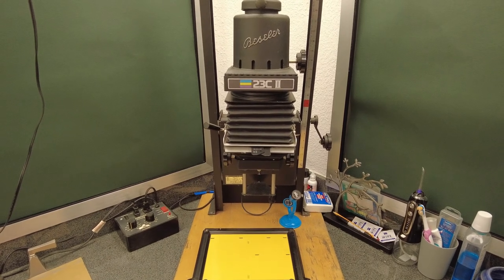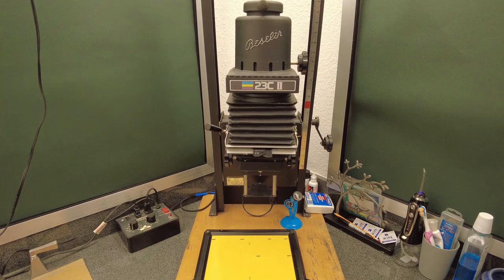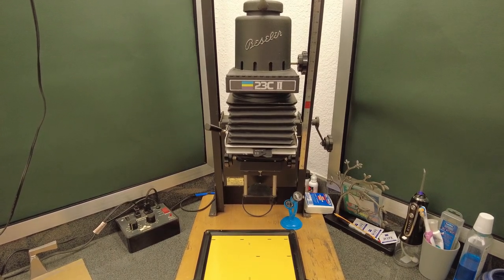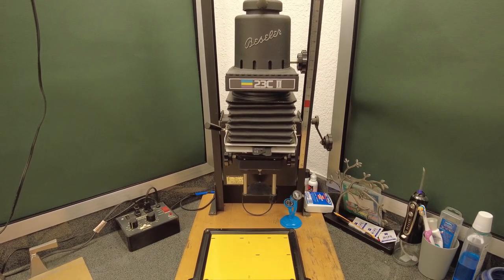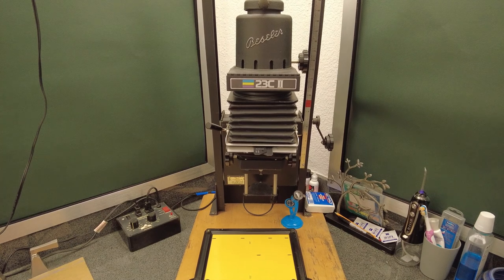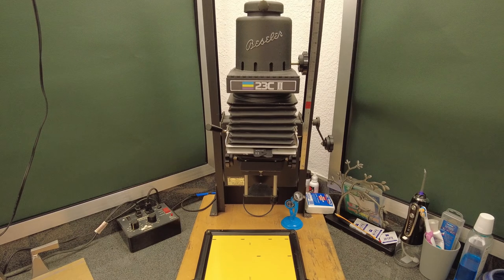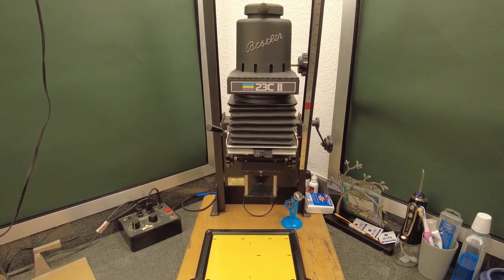This particular enlarger was purchased from an art thrift store called Recreative in Denver. This was a really awesome find. For only $50 I got a functioning enlarger with the easel, grain focuser, and a bunch of other tools as well as the lenses. It really pays off to look around at different places that sell used items.